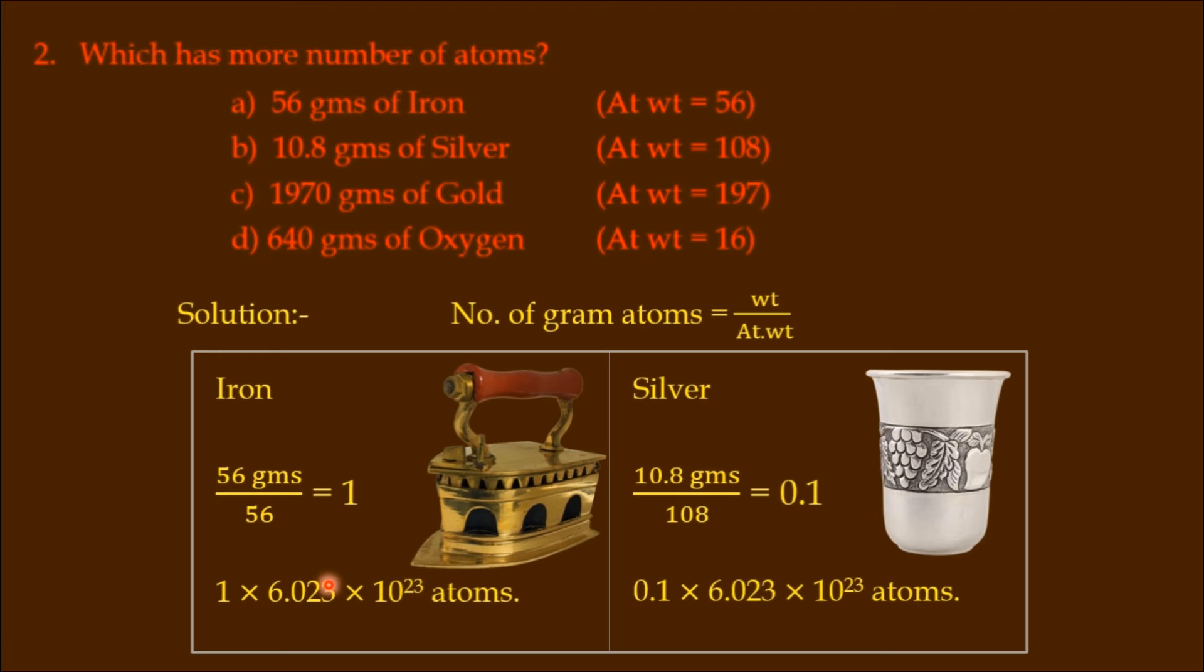1 gram atom contains how many atoms? 6.023 × 10^23 atoms. So 1 gram atom has this same number. Here, 0.1 gram atoms times 0.1. These are the number of atoms now. Now we've discussed options A and B.